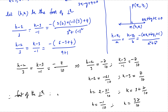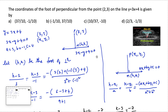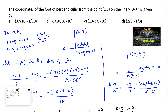Therefore the required foot of the perpendicular is (-1/10, 37/10). So we can go with option B — option B is the answer.